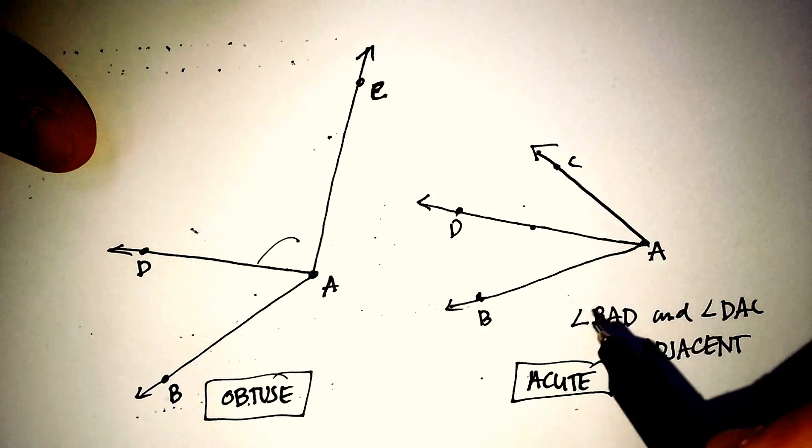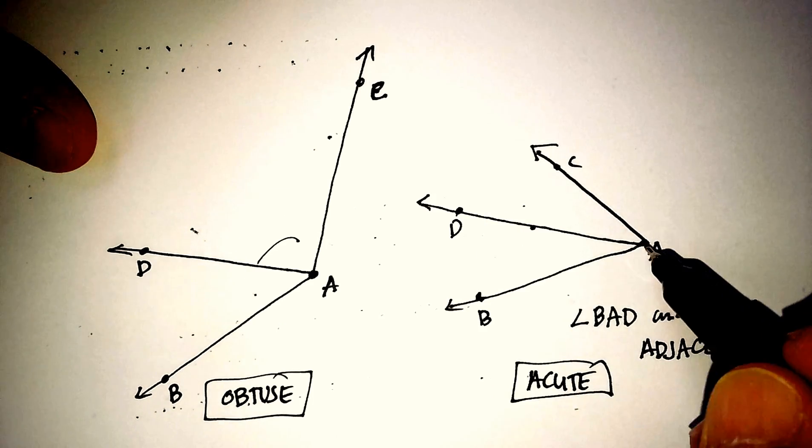So I hope that was helpful. Adjacent angles share a common ray and they share a common vertex.